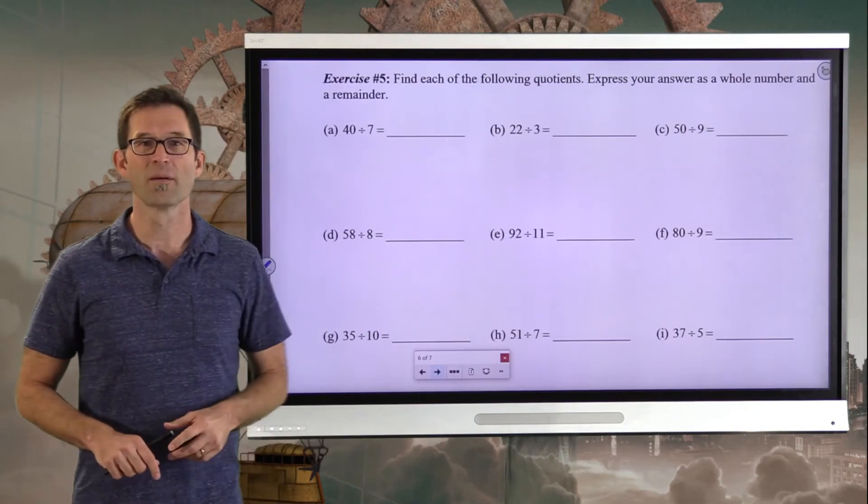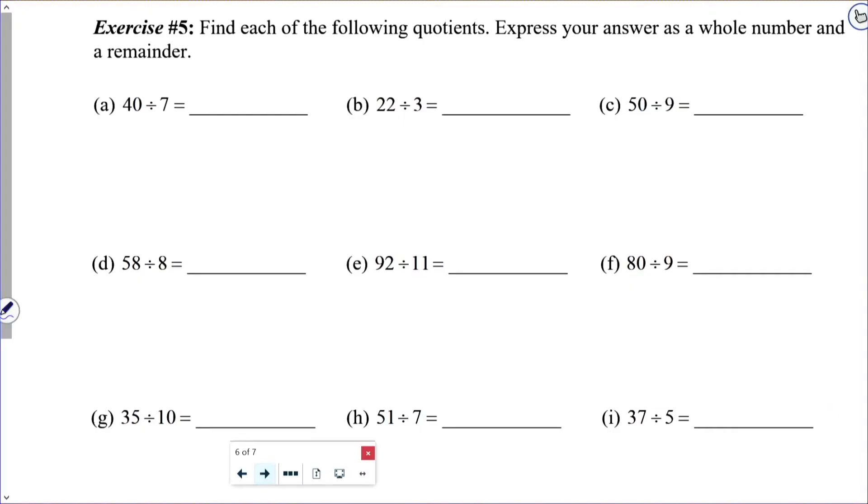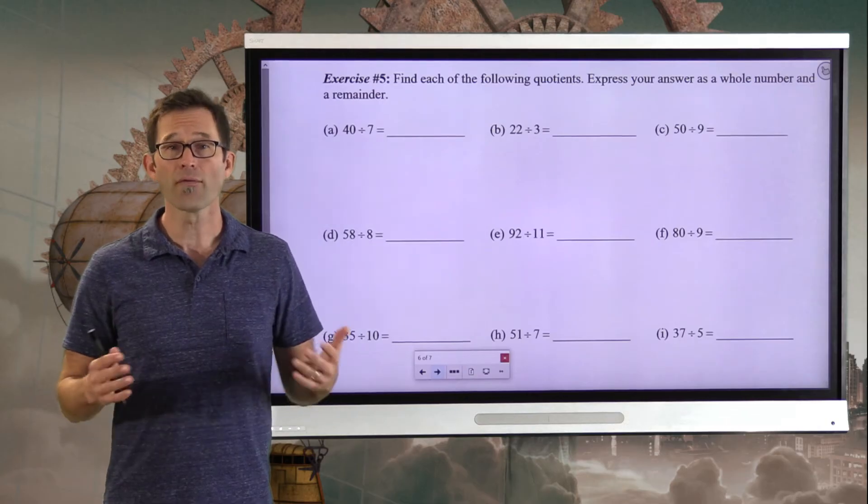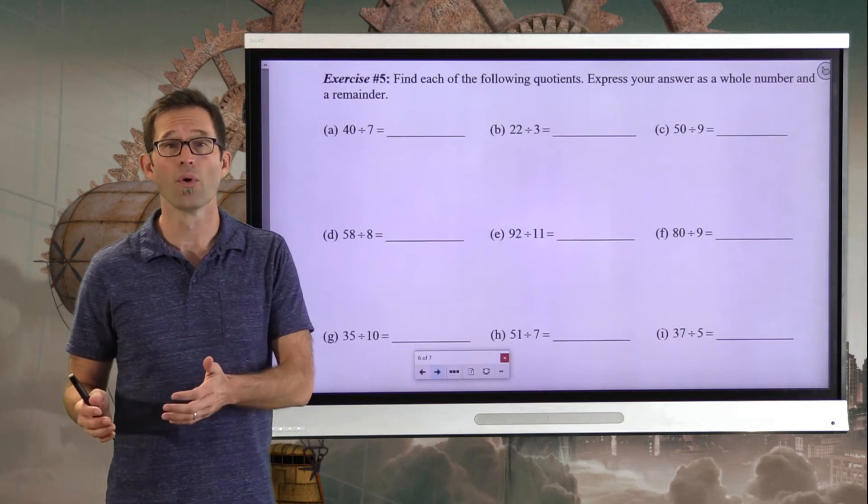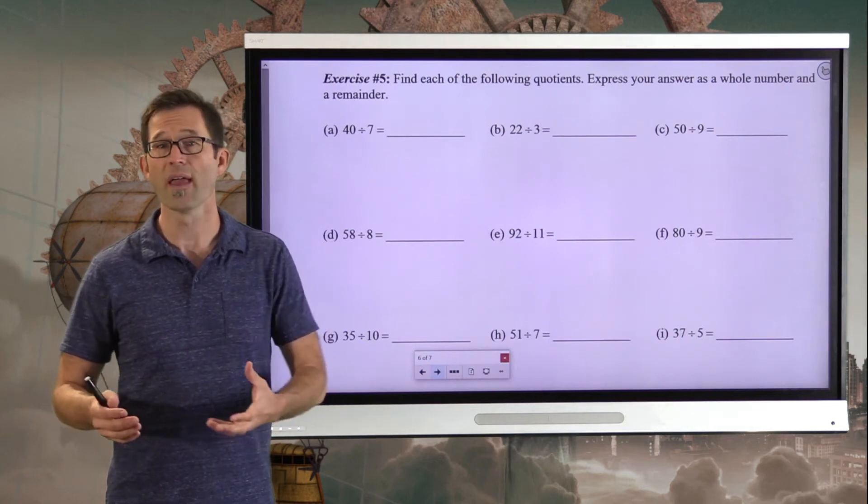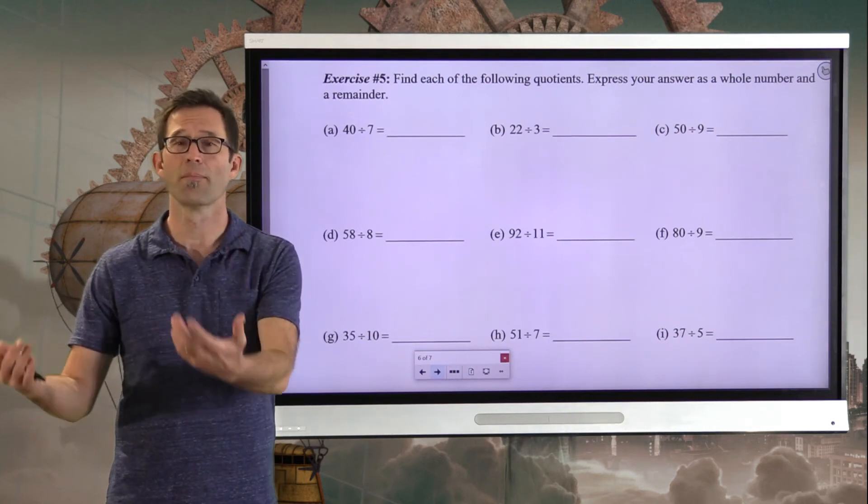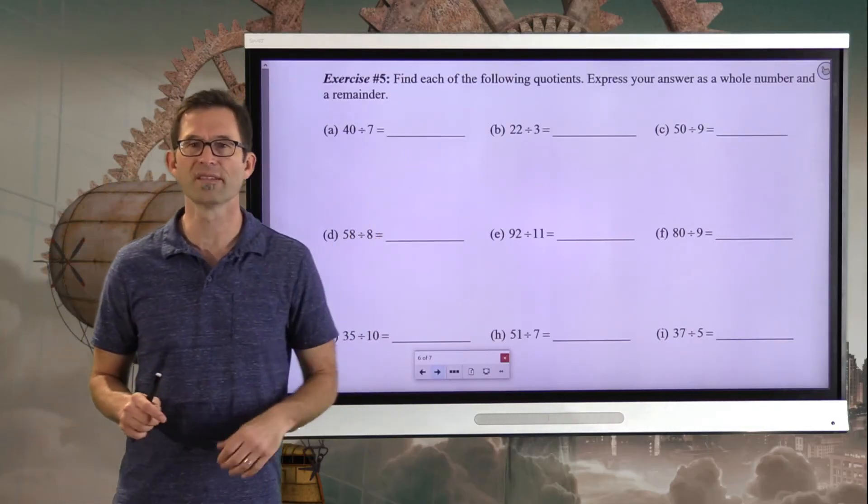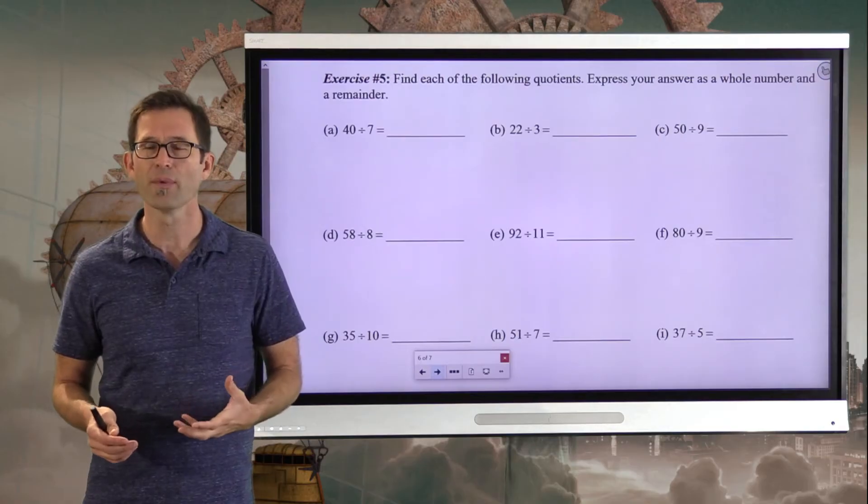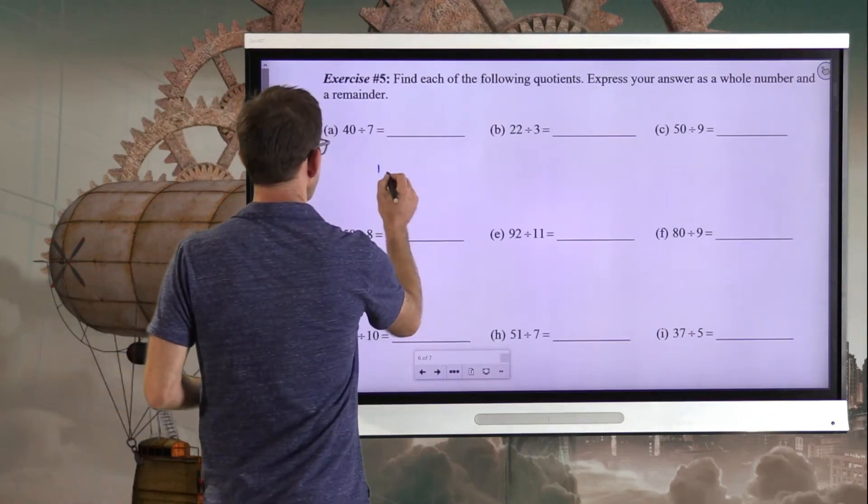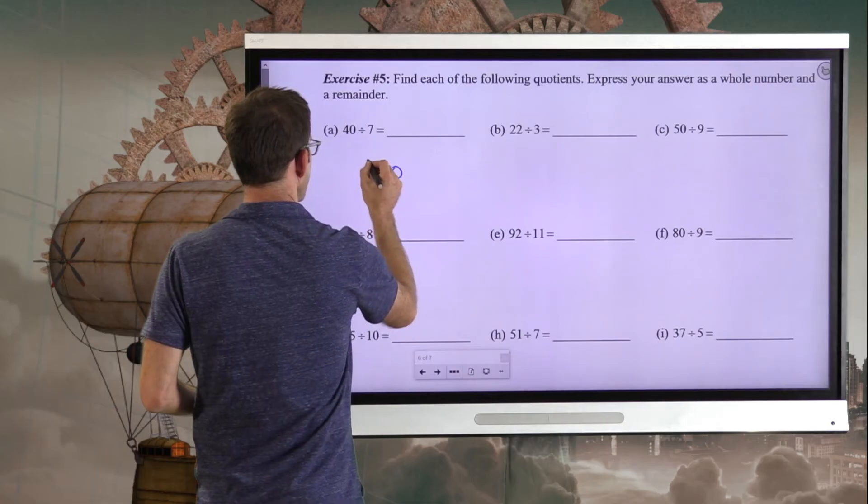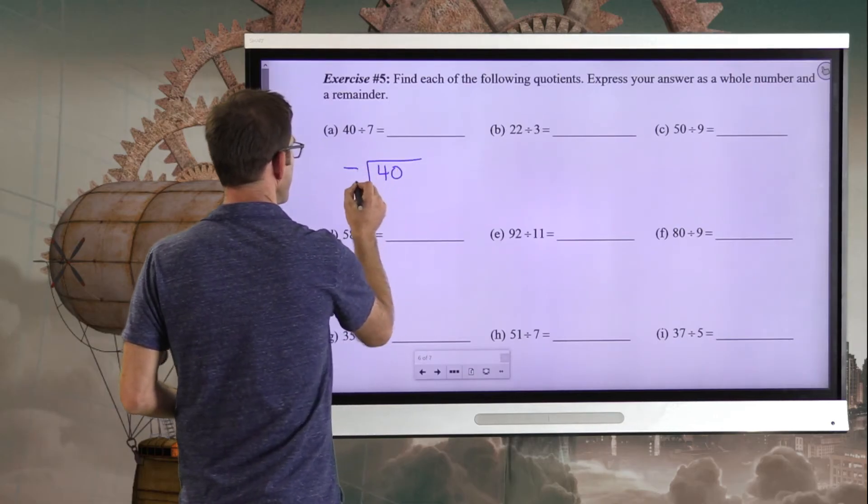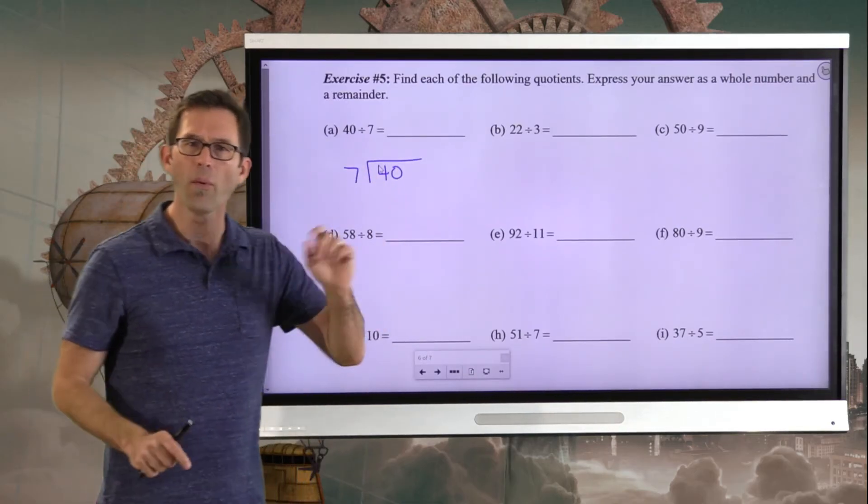Now, we're going to talk more about fractions and mixed numbers and improper fractions and all of that in the next unit. So let's not worry too much about this right now. Let's primarily worry about division, where we have a remainder leftover. And let's get a little bit to practice on that in the last exercise. All right. Exercise number five, find each of the following quotients. Express your answer as a whole number and a remainder. All right. So in every one of these problems, our result is not just a whole number. It's a whole number plus there's something that remains.